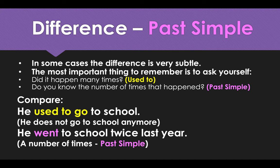Let's compare. 'He used to go to school' — he doesn't go to school anymore. But if I said 'he went to school twice last year', this means that because we have a number of times, we need to use the past simple.